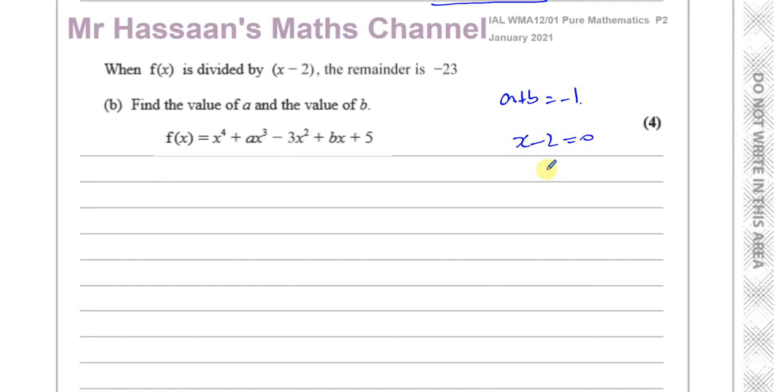So if I substitute 2 into the function, -23 has to come out. So I can form another equation now by putting 2 instead of x. So 2^4 + a(2)^3 - 3(2)^2 + b(2) + 5, that's going to give me -23. So I can make another equation.